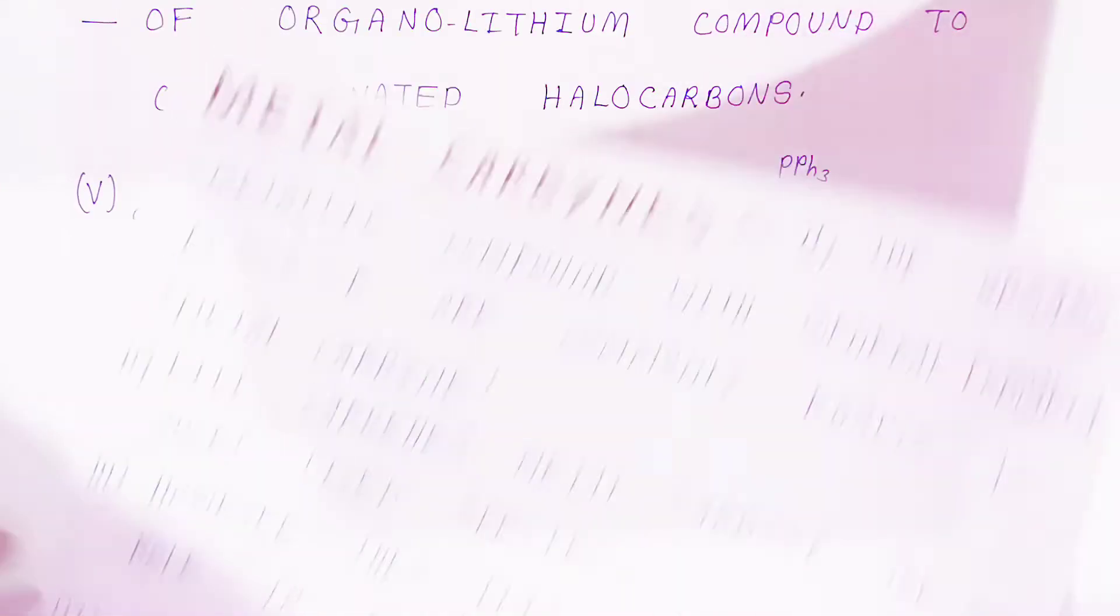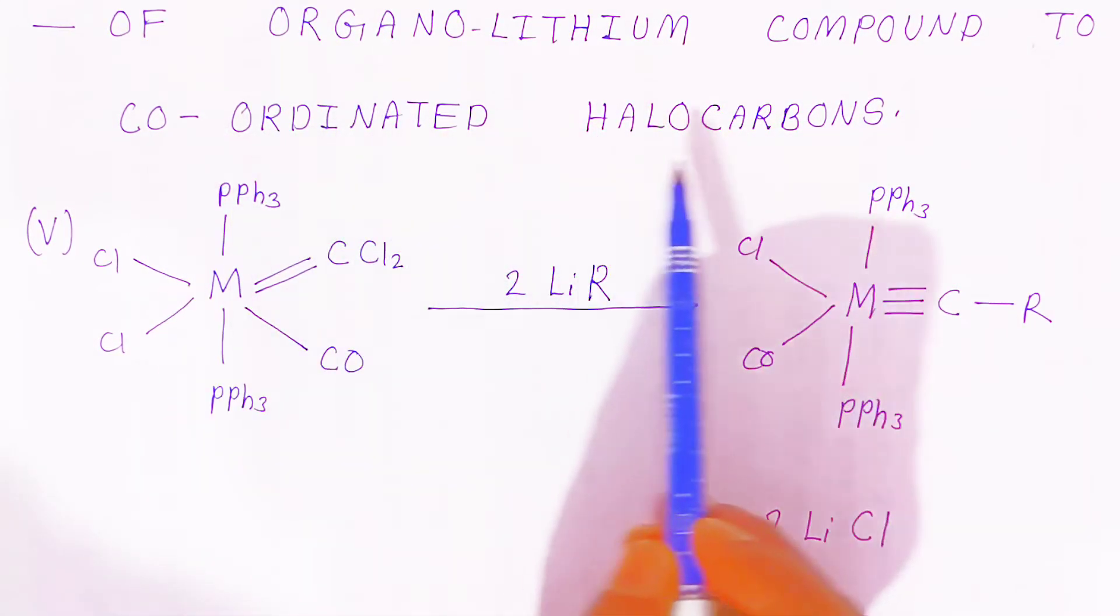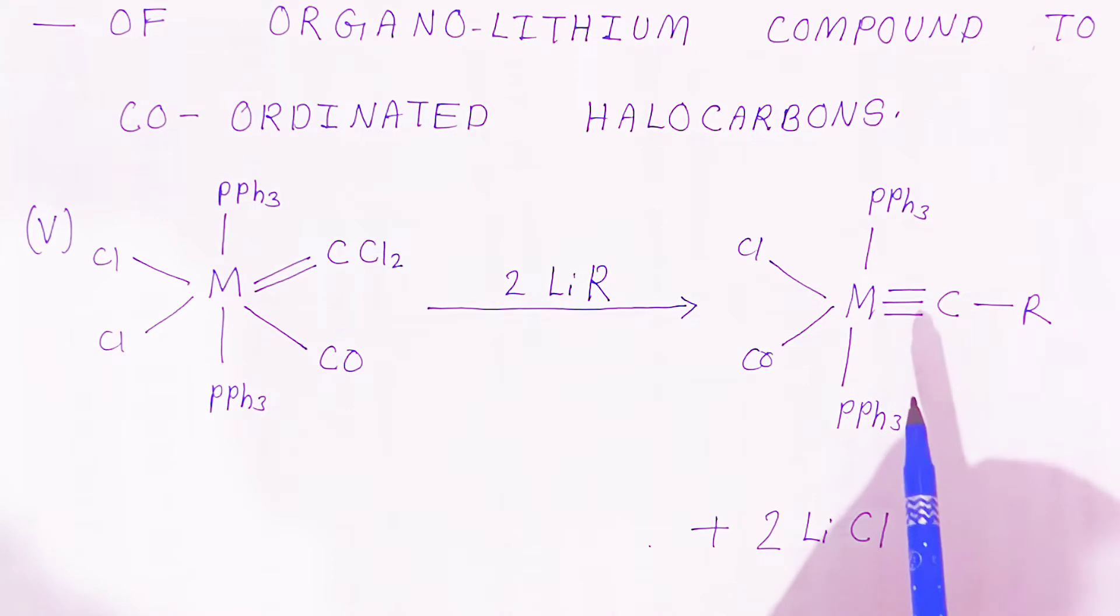They can be prepared by addition of organolithium compound to coordinated halocarbons. So this is the way you can prepare metal carbynes.